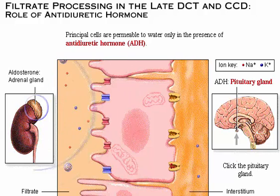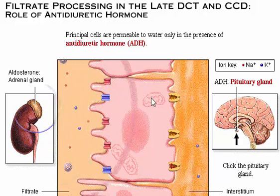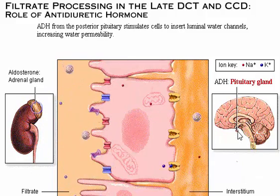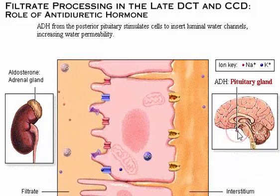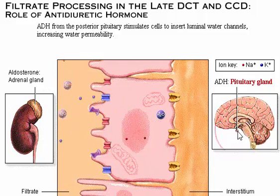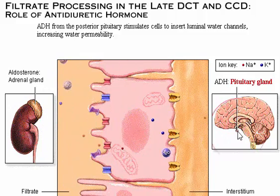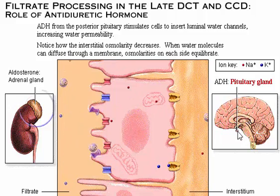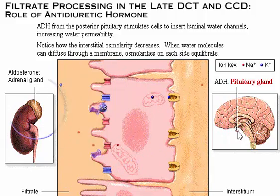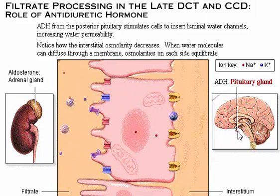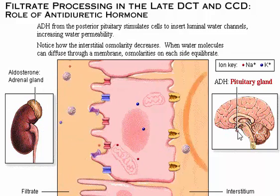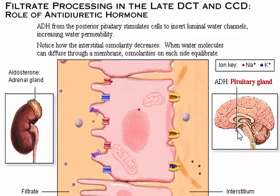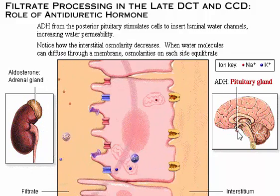Click the pituitary gland of the brain icon to release ADH and see its effect. When stimulated by ADH, principal cells quickly insert luminal water channels, increasing their water permeability. Notice that the interstitial osmolarity decreases. When water molecules can diffuse through a membrane, osmolarities on each side of the membrane equilibrate.